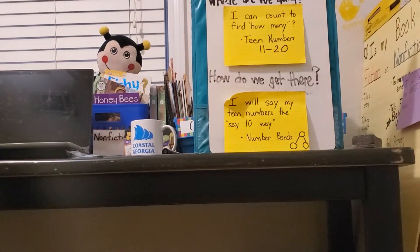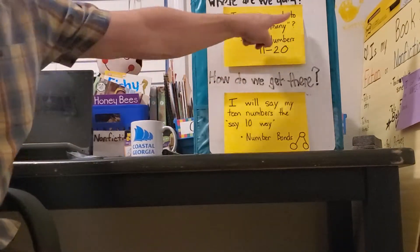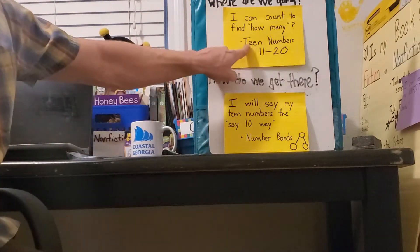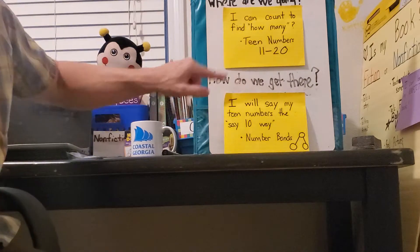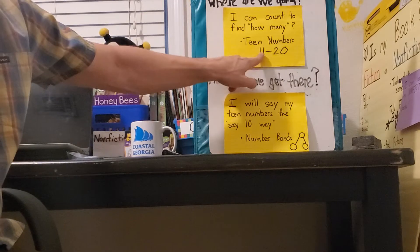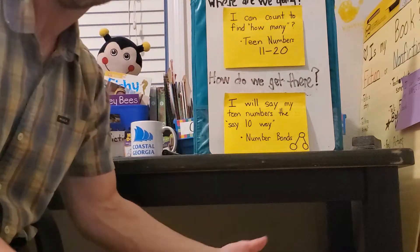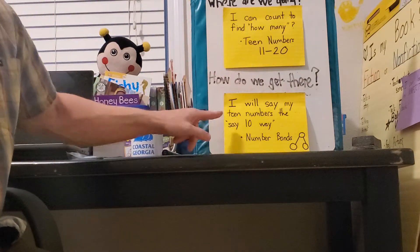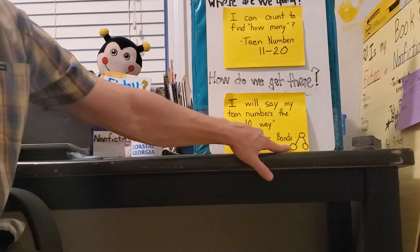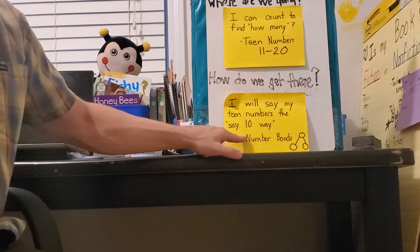We've been working with some very special numbers. So today boys and girls, where we are going, or what we're learning, is I can count to find how many. We're going to continue counting to find how many, and we're looking at our teen numbers. We call those our teen numbers because we hear teen at the end as we say them. The teen numbers are from 11 all the way through number 20. And how we're going to get there, or the way that we're going to show what we know today is I will say my teen numbers the say 10 way, and we are going to bring back a friend of ours, a strategy that we know how to use very well, called our number bonds.